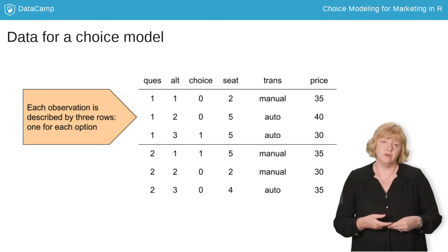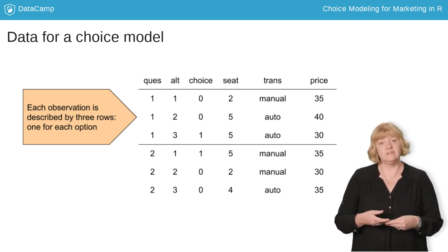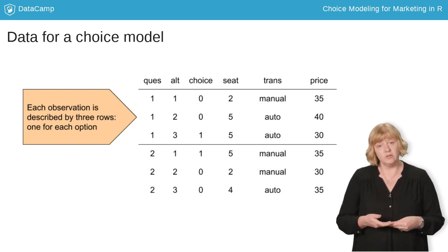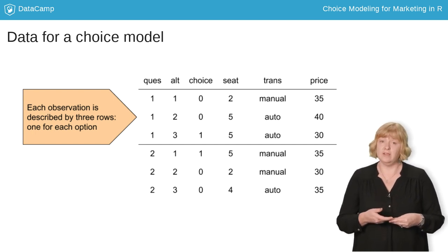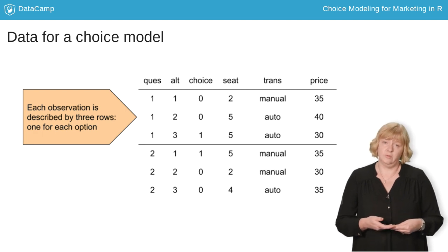The choice is recorded in the column labeled Choice as a 0 or 1 for each option, and of course only one option was chosen for each observed choice. In Question 1, the third option was chosen.